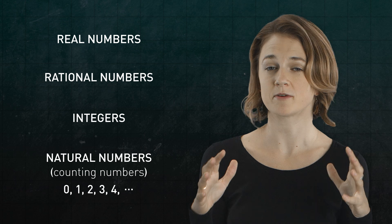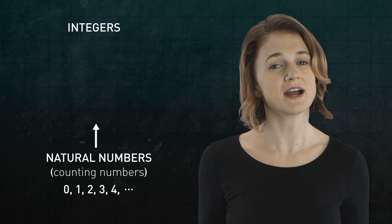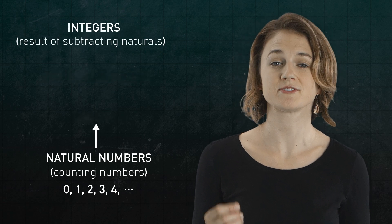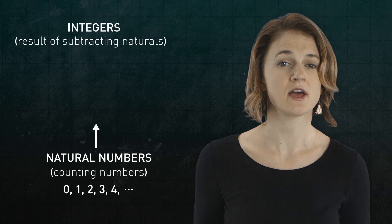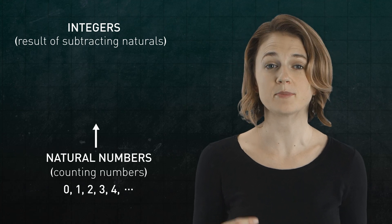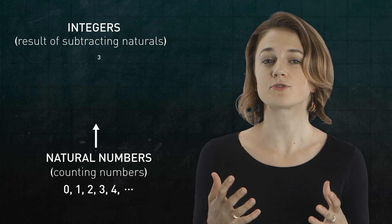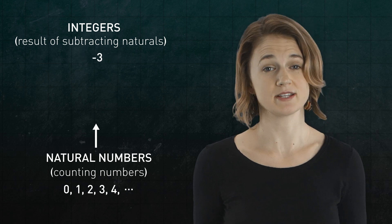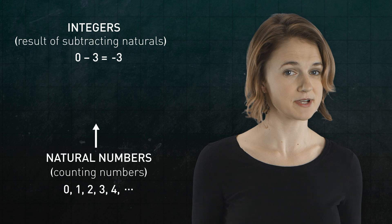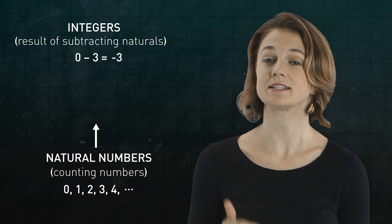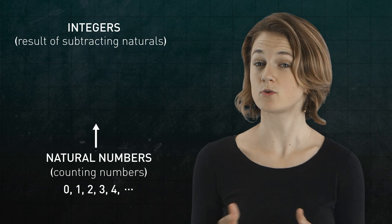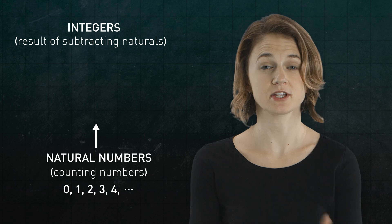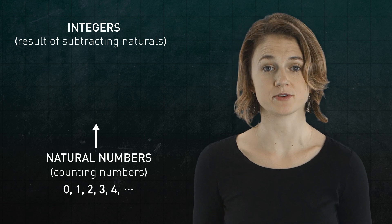Building up the pyramid from the natural numbers, we can define the integers as being the result of subtracting natural numbers. They're all the possible things you can get by subtracting one natural number from another. So three is an integer because it's three minus zero, and negative three is an integer because it's zero minus three. More precisely, we can define each integer as an equivalence class or a particular collection of pairs of natural numbers.